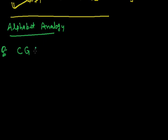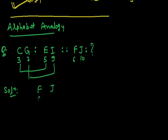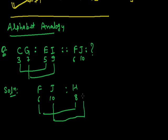Question: C, G is related to E, I — in the same way F, J is related to what? For the solution, we write the numbers of the alphabets: C=3, G=7, E=5, I=9, F=6, J=10. We see that 3+2=5, 7+2=9. Similarly, 6+2=8 (H) and 10+2=12 (L). So the answer is H, L.